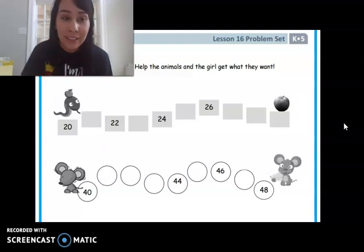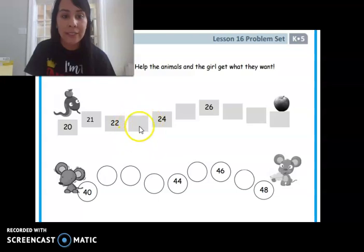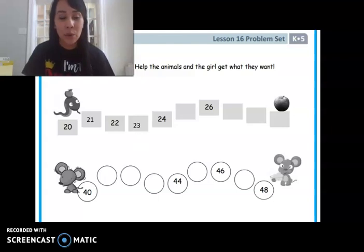Okay. So 20, one more is, think, get ready. Yeah. 21. Okay. Then we get to 22. One more is, think, get ready. Yeah. 23. One more is, think, get ready. Yeah. 24. And they wrote it for us, right? So they wrote 24. 24. One more is, think, get ready. Yeah. 25. Then they wrote our next number. 26. One more is, yeah. 27. One more is 28. And our apple is at, think, get ready. Yeah. 29.